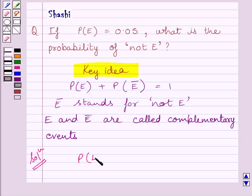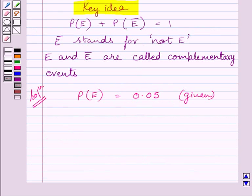Now we are given in the question that probability of E is equal to 0.05. We have to find probability of not E.